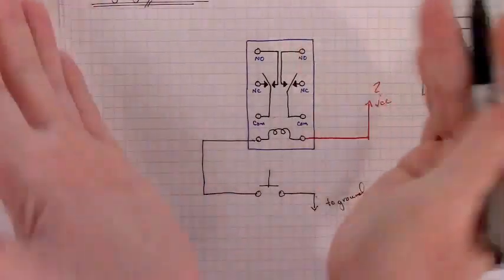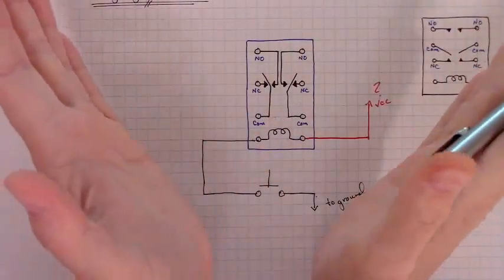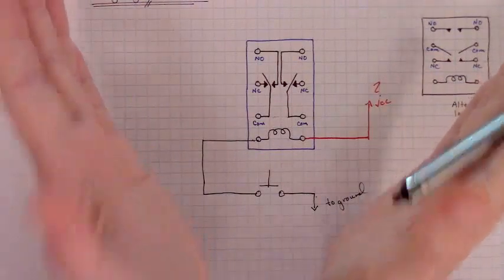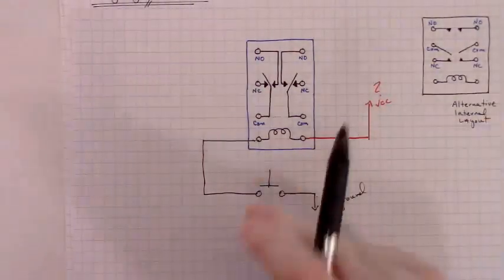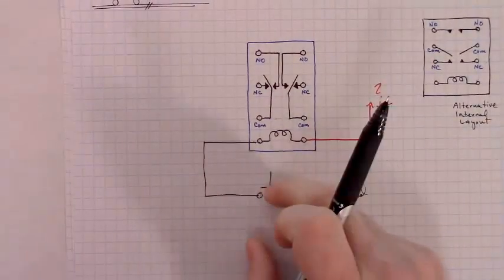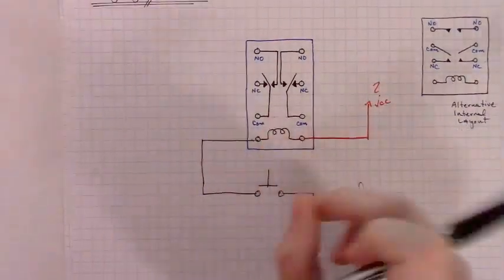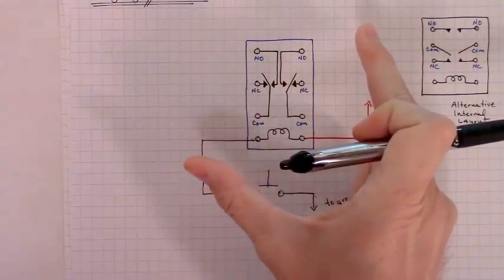That's their resting state in the context of relay with this internal layout. The flippers are like this. When you energize the coil, they go like that. This would give us the ability to push a button, energize the coil, flip the contacts, release the button, and the contacts go back to their relaxed state.